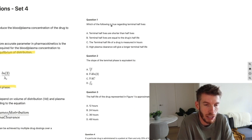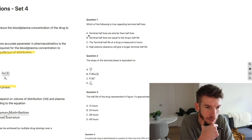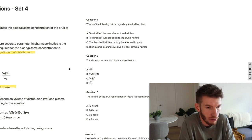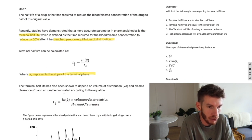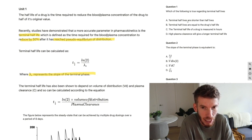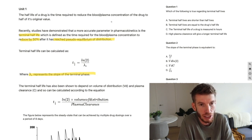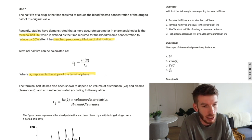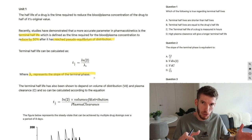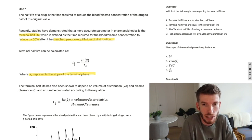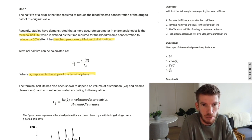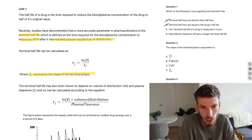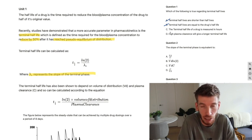Question 1: which of the following is true regarding terminal half-lives? First statement: terminal half-lives are shorter than half-lives. Looking at the formulas, there's nothing indicating they're shorter or longer — there's no information about the actual time interval. That immediately rules out the first two options about relative length. I'd put those in the 'maybe' pile but look for something with more evidence.